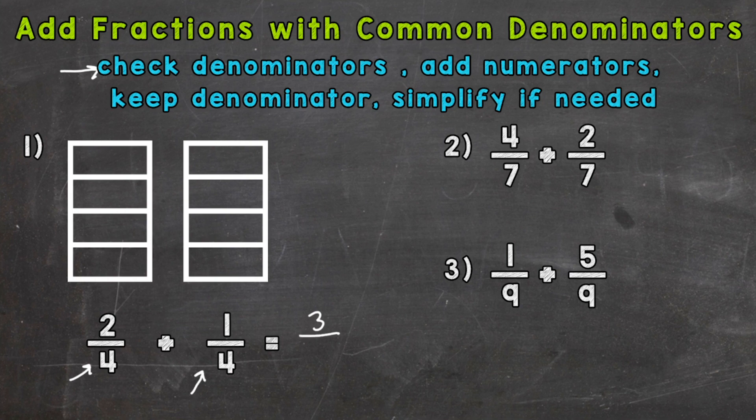We always keep our denominator the same. So four, four, and in our answer our denominator is going to be four. And we simplify if needed. In this case three-fourths is already simplified. The only common factor between three and four is one. So we're in simplest form. Our answer is three-fourths.